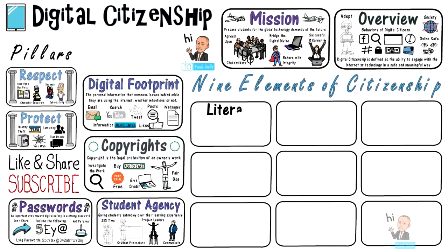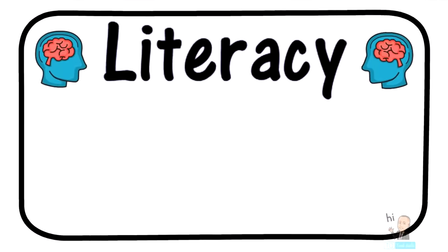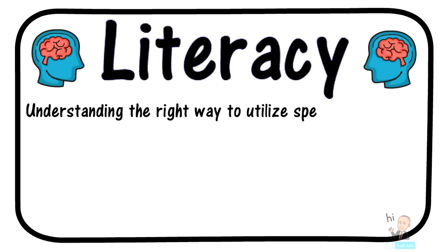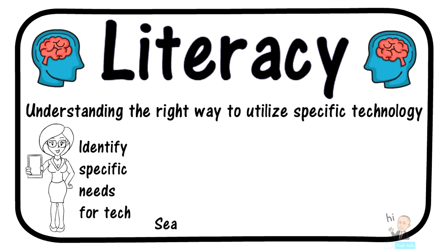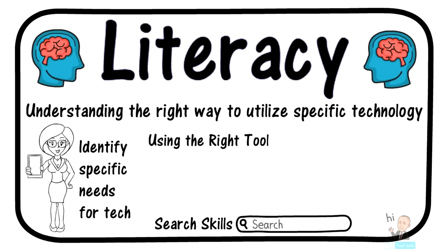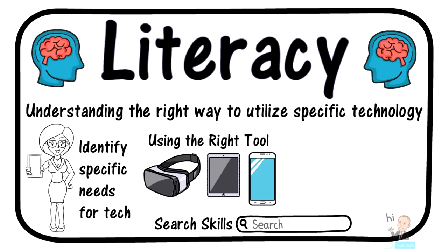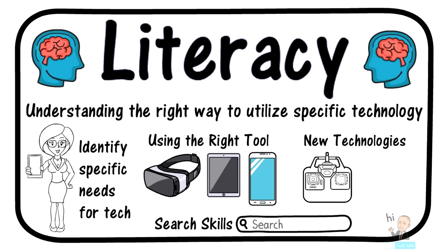Now we approach the nine elements of digital citizenship. The first of the nine elements is digital literacy, defined as the right way to utilize specific technology. Before using technology, you first have to identify the specific needs for that technology — consider the different needs for an iPad as opposed to a Chromebook. Digitally literate students are skilled at searching the internet and finding and evaluating information for its validity. Digital literacy is also about finding and using the right tool, which isn't easy considering the vast number of digital tools available. You need to keep up with new technologies, updates, and changes that occur so frequently.